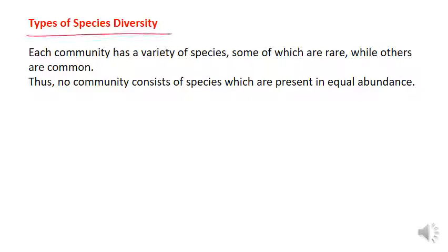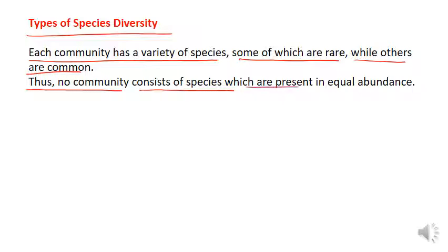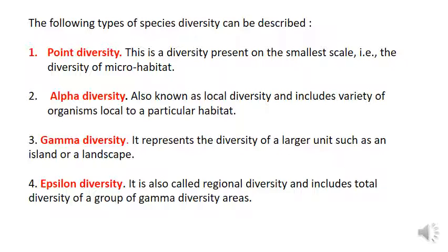Types of species diversity: Each community has a variety of species, some of which are rare while others are common. Thus, no community consists of species which are present in equal abundance. आज भी बहुत सारी ऐसी communities हैं जिसमें कुछ species rare हो गए हैं, या rare to rare हो गए हैं, और बहुत सारे तो common हैं. The following types of species diversity can be described.